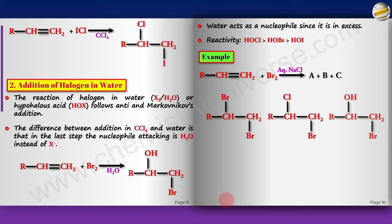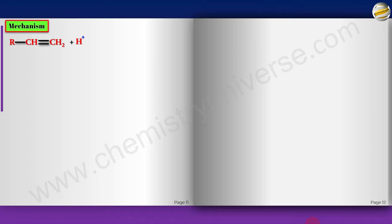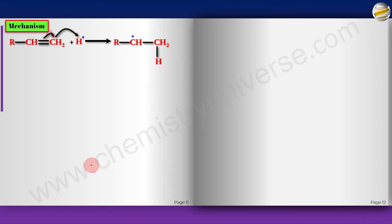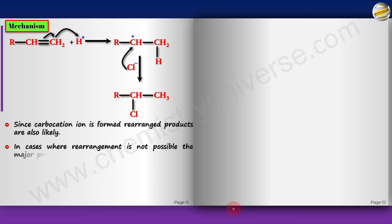Addition of HX to unsymmetrical alkenes takes place according to Markovnikov's rule. In the mechanism, the alkene takes the electrophile H+; since H does not have a lone pair, it does not form a ring — it forms a carbocation. The more stable carbocation is the secondary (middle) one, so the pi bond moves to the terminal carbon, which takes H+. Then Cl− attacks to give the Markovnikov product. Since a carbocation is formed, rearrangement will occur if possible; if not, the major product follows Markovnikov's rule.